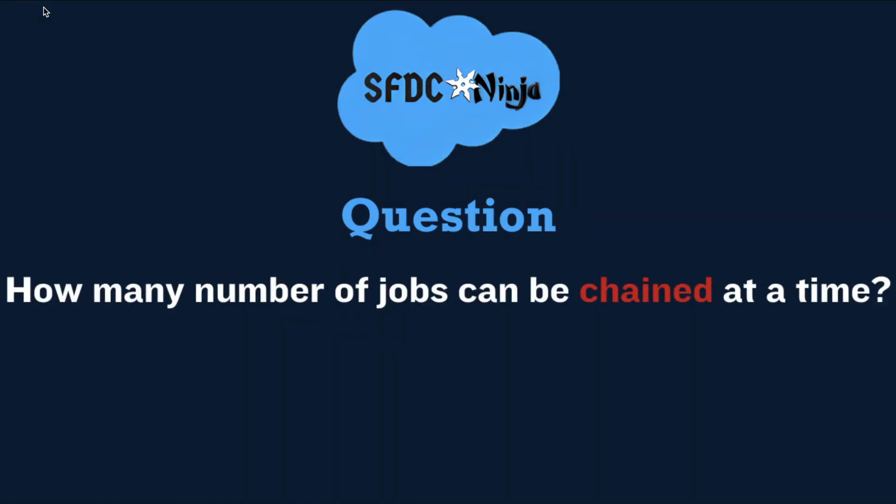Next question: how many jobs can be chained at a time? There is no limit enforced on the depth of chained jobs — you can chain one job to another and repeat this process with new child jobs. But for Developer Edition and trial orgs, the maximum stack depth for chained jobs is 5, which means you can chain jobs 4 times, and the maximum number of jobs in the chain is 5.